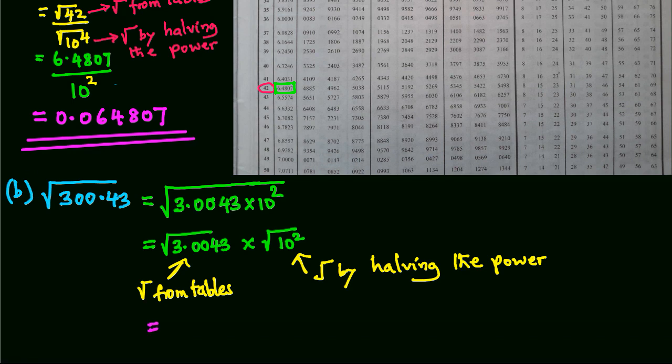Therefore, from tables, square root of 3.0043, and remember we are working with 4-figure tables, so 3.004 is 1.7332.